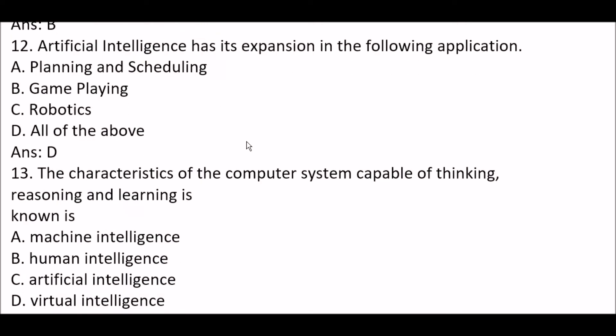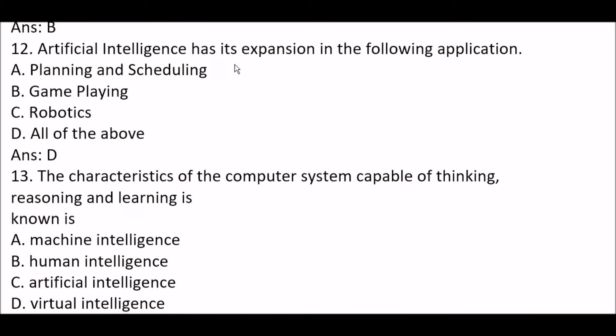Next question: artificial intelligence has its expansion in the following applications — Option A: planning and scheduling. Option B: game playing. Option C: robotics. Option D: all of the above. The right answer is Option D — all of the above: planning and scheduling, game playing, and robotics.